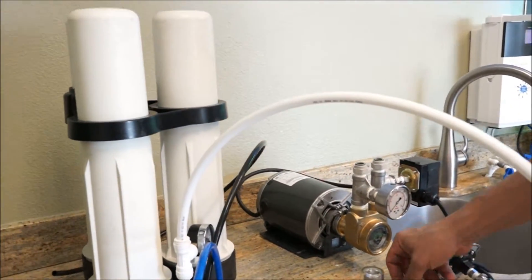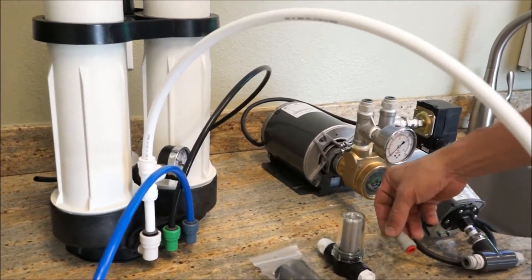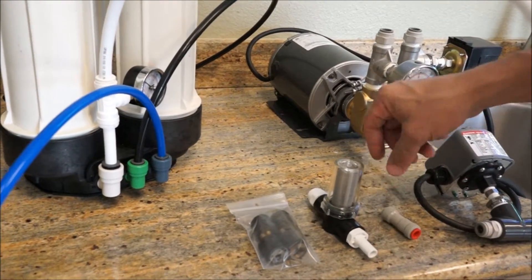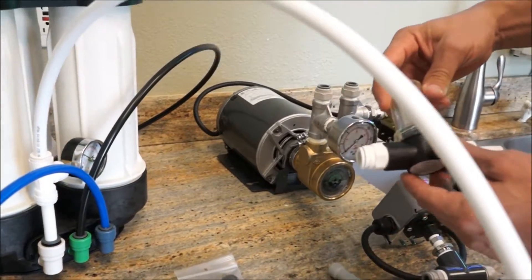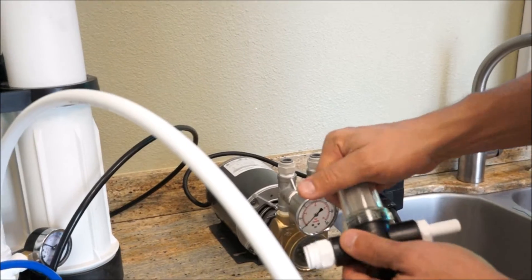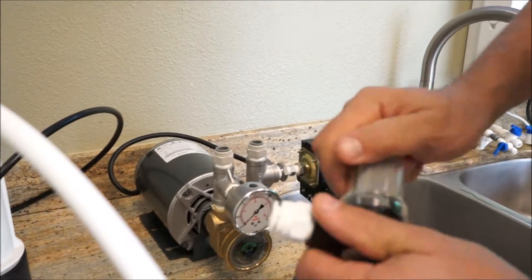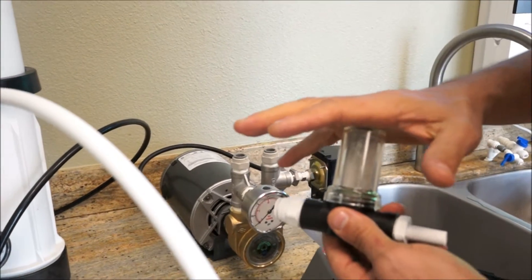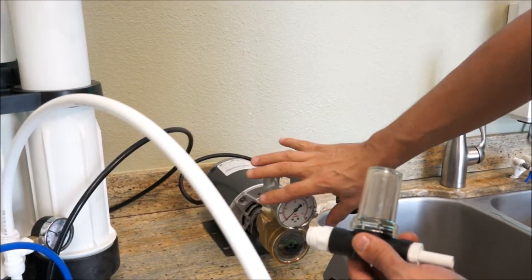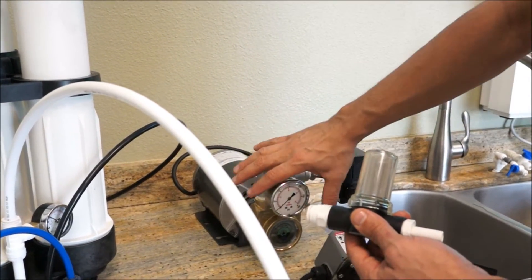The other parts that come with it are the check valve. It's a one-way valve. The pump filter or pump protector. This has a mesh screen inside. You can unscrew it and clean it out. This basically keeps any debris out of the pump itself because any small debris can damage the pump.